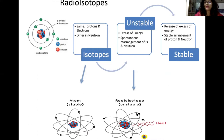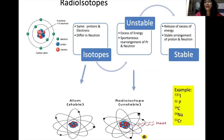Isotopes which were unstable previously but which radiate heat or particles are known as radioisotopes. Examples include iodine-131, phosphorus-32, sodium-24, and chromium-51. These are a few examples of radioisotopes.